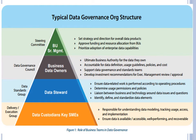An organization must have a data governance structure. Here we have a typical data governance organization chart. At the top of the chart we have our steering committee. The steering committee sets the strategy and direction for the overall data program, approves funding and resource allocation from the business units, and prioritizes the adoption of enterprise data capabilities. The steering committee usually consists of senior management and executives, where the overarching strategy for data is decided.